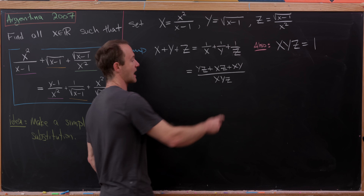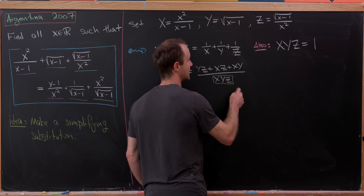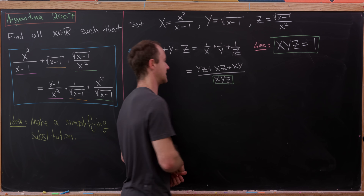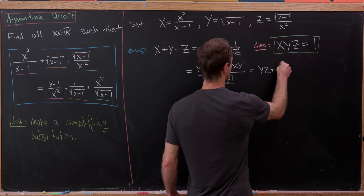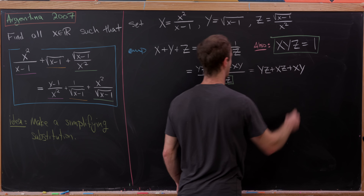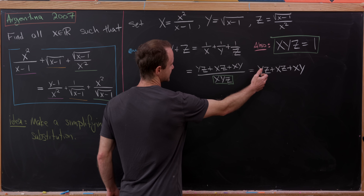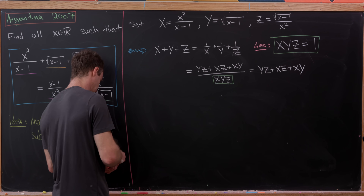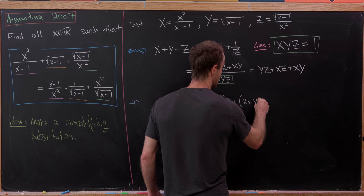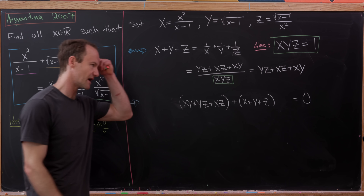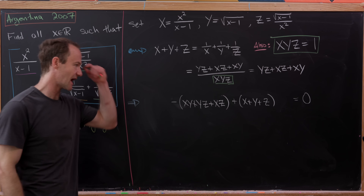Given this setup, our equation turns into the following: the left-hand side is simply X plus Y plus Z, and the right-hand side, given all those reciprocals, is 1/X plus 1/Y plus 1/Z. This makes things look nicer — no squares or square roots — though it introduces three variables, which is a bit more complicated.